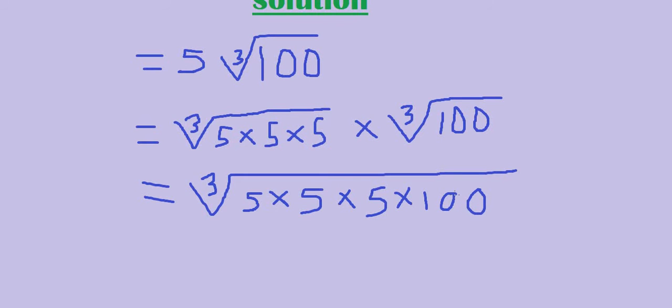To express all these under a single radical sign: 5 times 5 is 25, 25 times 5 is 125, and 125 times 100 is 12,500. So we get the cube root of 12,500.